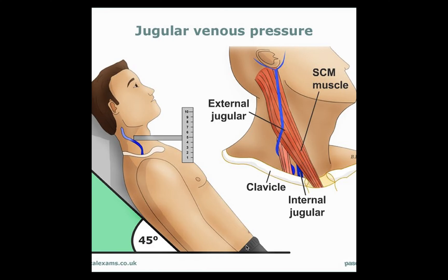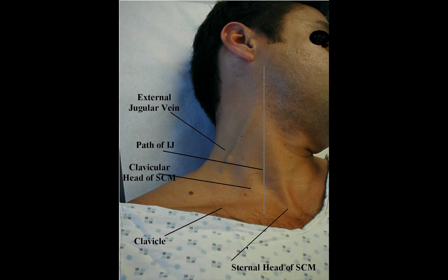The patient should be at 45 degrees and the head should be turned slightly to the left. Then we have to locate the surface markings of the internal jugular vein, looking for the double wave pulsation by palpating the contralateral carotid pulse, which is helpful. Then we have to measure the level of the jugular venous pressure.